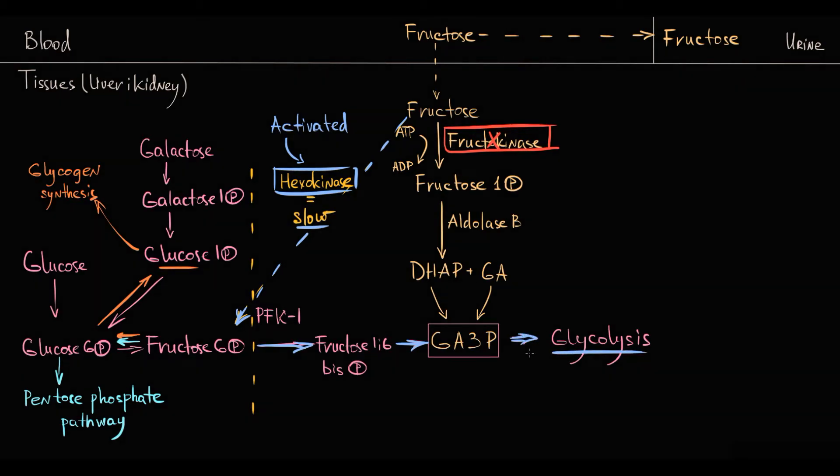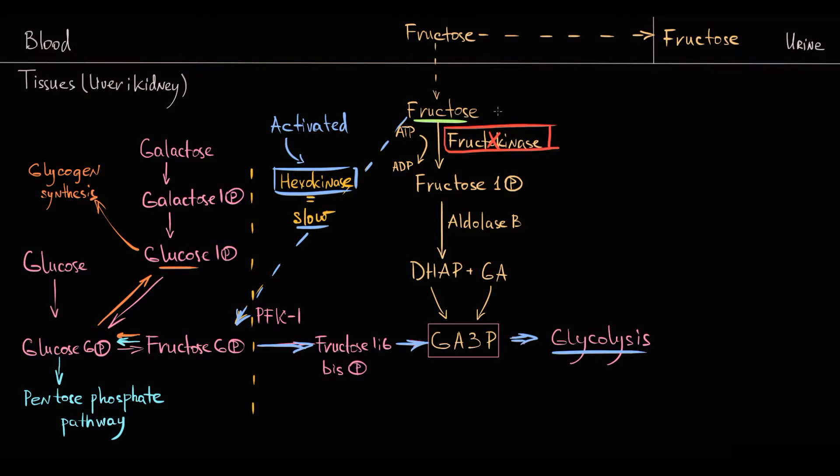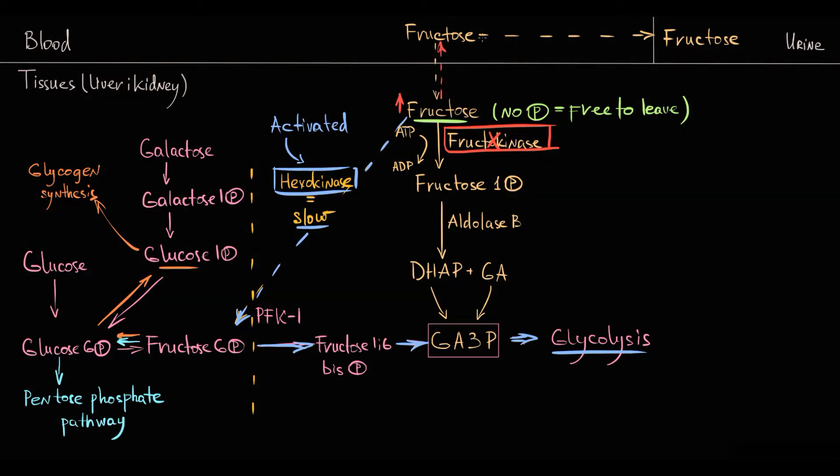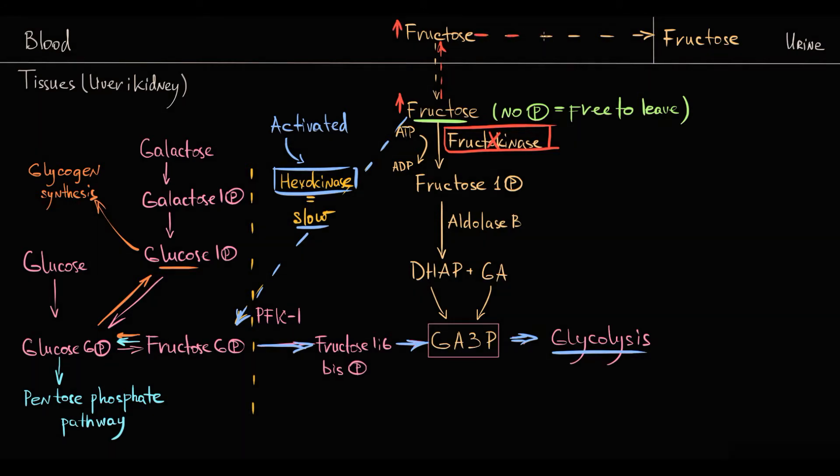Also important is that fructose that enters the tissue and does not have time to be phosphorylated by hexokinase is free to leave the tissue because it does not have a phosphate group on it. So fructose leaves tissue and goes back into the blood. Thereby in fructokinase deficiency, fructose does not accumulate in the tissues. Because fructose goes back into the blood, fructose level in the blood increases, thereby fructose level in the urine will increase.